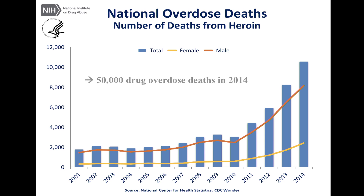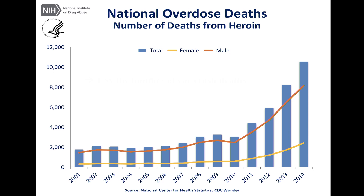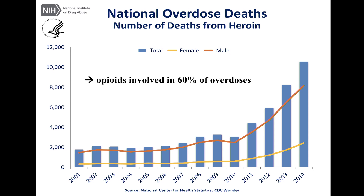To give us some context: in 2014 there were 50,000 drug overdose deaths — one and a half times the number of car crash deaths in the United States that year. 60% of the overdoses were associated with opioids, and here we're looking at overdose deaths from heroin, one of the most commonly injected opioids. In the past five years there has been a staggering increase — not just in the traditionally higher-risk male population but in the female population as well. We really consider this a national epidemic and a public health crisis.